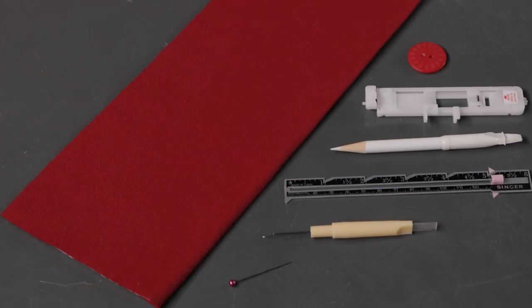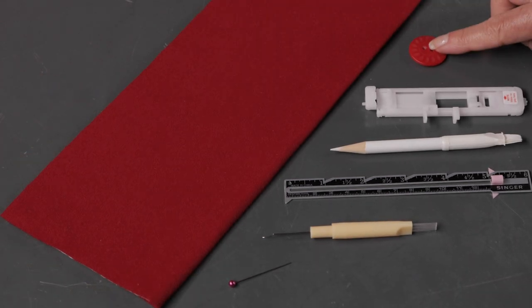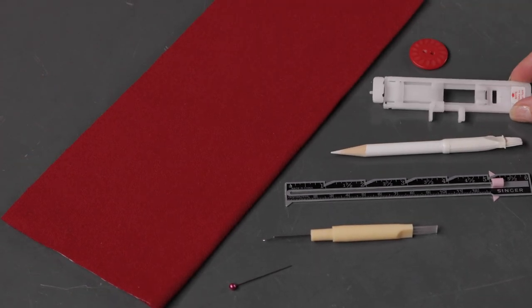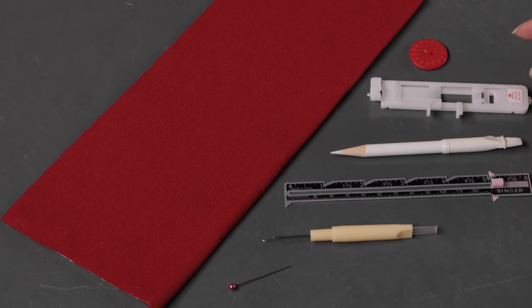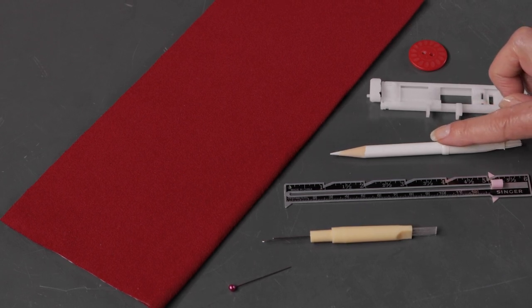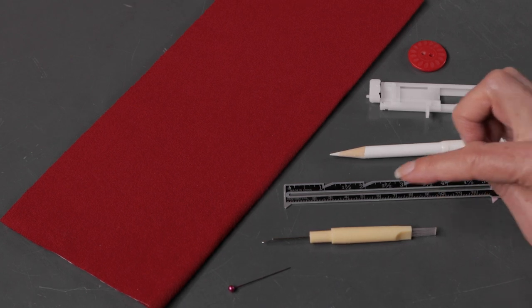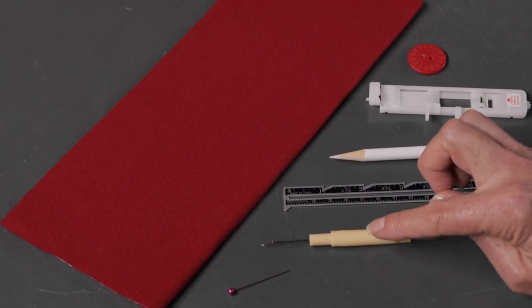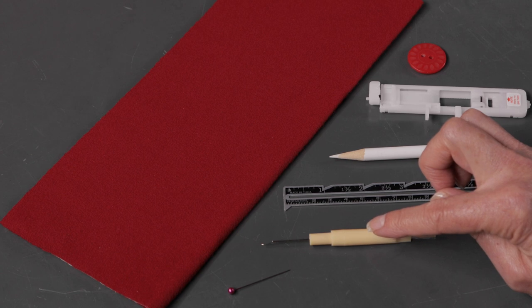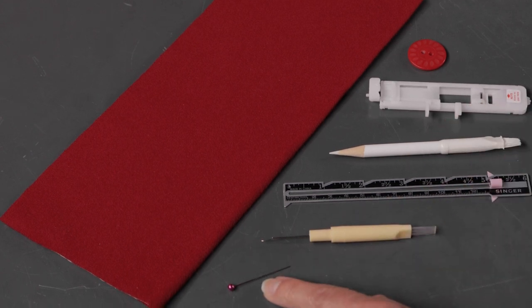To sew a buttonhole, you'll need your button, of course, and the buttonhole foot from your machine. You'll also need a fabric marking pen or pencil, a small ruler, and from your machine's accessories, a seam ripper and a straight pin.